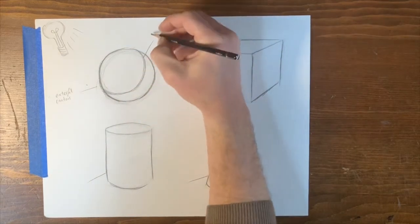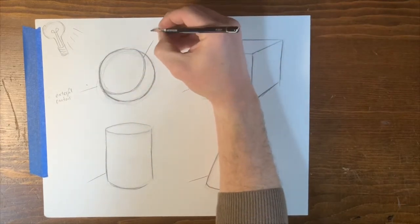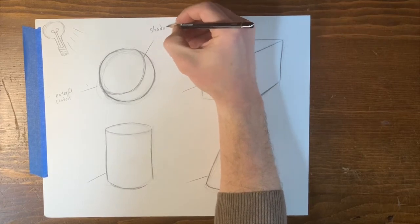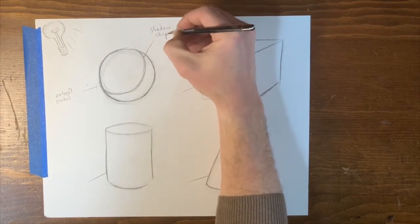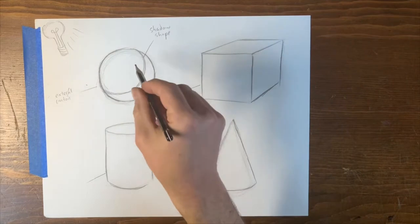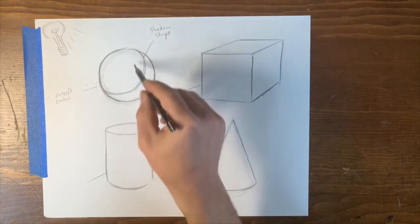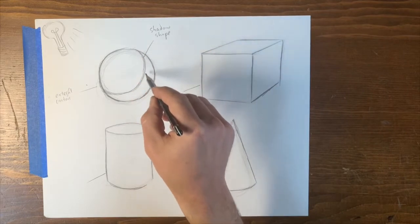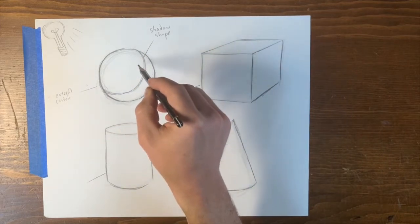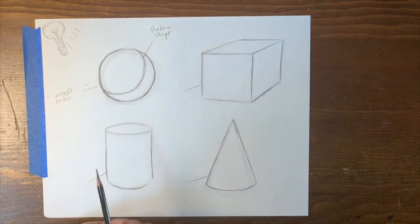And that line right there, we would call the shadow shape. The shadow shape is the boundary between light and dark. So if light is coming from here, this is light, this is dark. We can draw a line where the shadow runs and that's called a shadow shape.